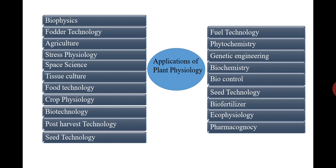Food technology — in today's market there are a number of food products available. There is tremendous yield at the time of season, but as the season is over, that crop gets wasted. Instead, if that food is processed, it can be stored for a longer duration. The knowledge of plant physiology helps to process food under food technology.